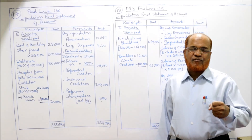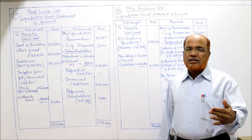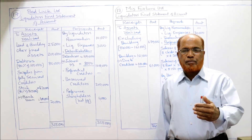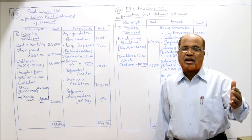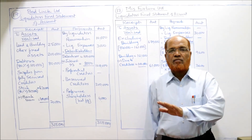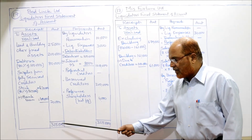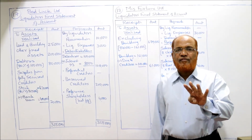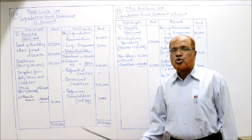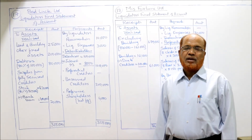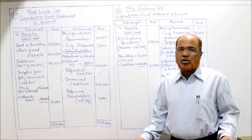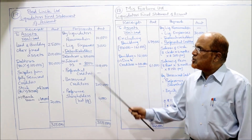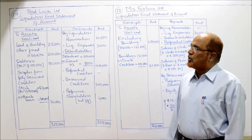After making full payment to unsecured creditors, some amount is still left, which will be repaid to preference shareholders first. After paying the whole preference share capital, if any amount remains it goes to equity shareholders. From 3,25,000 subtracting 10,000 + 3,000 + 1,08,000 + 2,00,000, the remaining balancing figure is only 4,000 rupees. This 4,000 is returned to preference shareholders; equity shareholders get nothing.